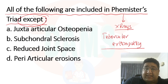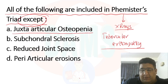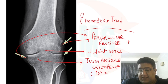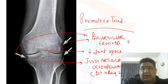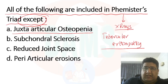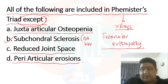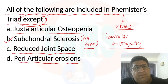Now let's solve the MCQ answer. Phemister's triad includes juxta-articular osteopenia — which is the first X-ray sign to develop — reduced joint space, and periarticular erosions. Subchondral sclerosis is actually seen in osteoarthritis of the knee, not in Phemister's triad, so that is the exception.